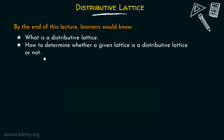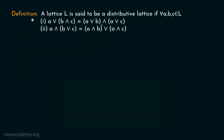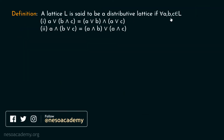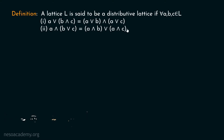Without any further delay, let's get started. A lattice L is said to be a distributive lattice if for all A, B, C belonging to L: A∨(B∧C) = (A∨B)∧(A∨C), and A∧(B∨C) = (A∧B)∨(A∧C). These two properties must be satisfied for a particular lattice; only then can we say it is a distributive lattice.